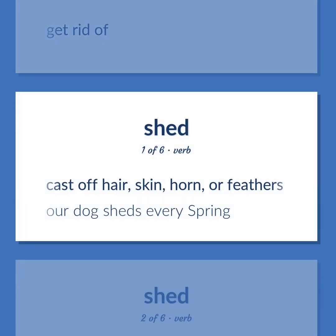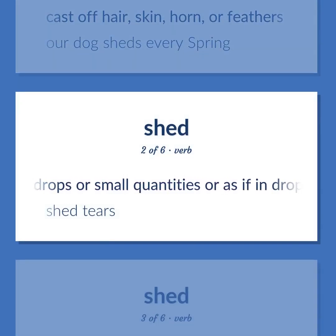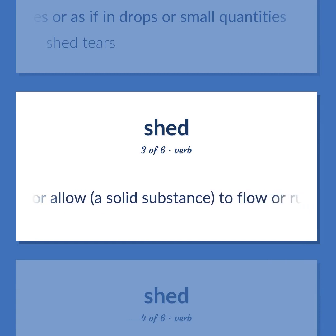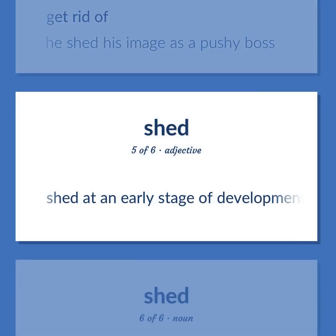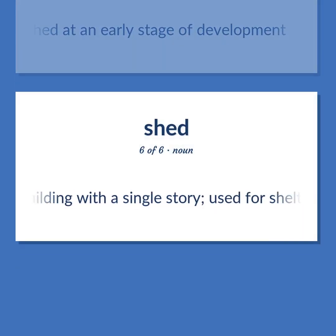Shed: Cast off hair, skin, horn, or feathers — our dog sheds every spring. Pour out in drops or small quantities, or as if in drops or small quantities — shed tears. Cause or allow a solid substance to flow or run out or over. Get rid of — he shed his image as a pushy boss. Shed at an early stage of development. An outbuilding with a single story used for shelter or storage.